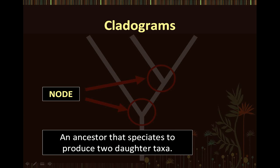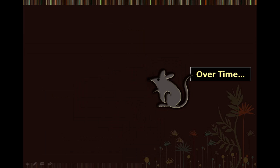Two branches originate from each node, meaning that two daughter species originate from each ancestral species. Let's discuss this concept with a real-life example. Let's say that this mouse represents an ancestral species and is put in two different environments — one that is very cold and one that is very hot. Over time, the ancestral mouse placed in a colder environment could develop thicker fur to keep warm, and so it differentiates into a new species.